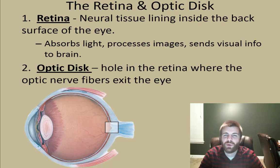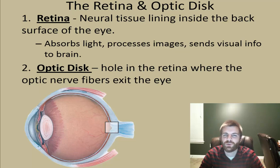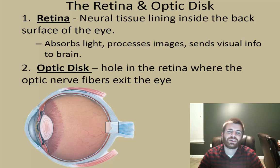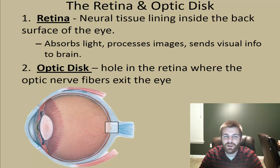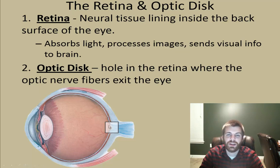Probably the most important part of the eye is the retina — an extension of neural tissue, essentially brain tissue, that lines the inside back surface of the eye. Its three main functions are to absorb light, process images, and send visual information to the brain. It does this through the optic disc, which is a hole in the retina where optic nerve fibers exit the eye. You can see in the diagram the box square indicating where the optic disc is located.